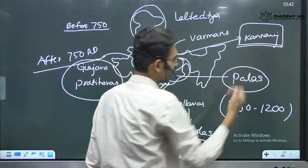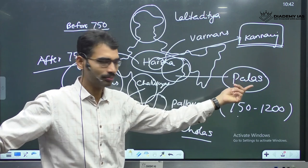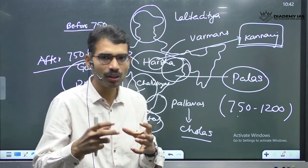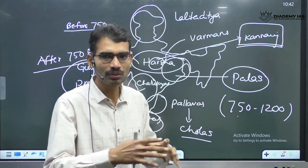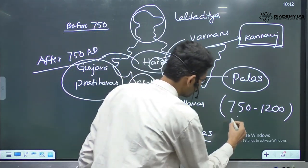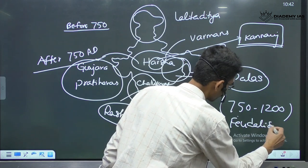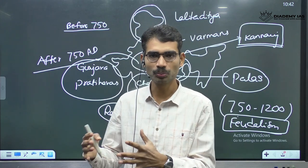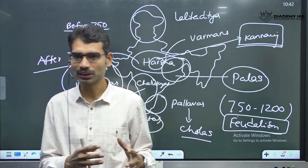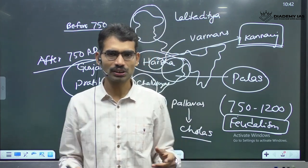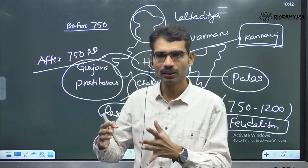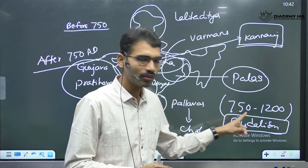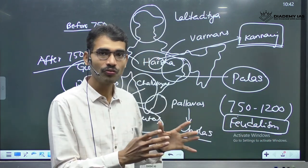There were so many other small kingdoms as well, not only Palas, Pratiharas, Rashtrakotas. These kingdoms we combinedly call the age of feudalism. Unlike Mauryans, unlike Guptas, there was no centralized administration around this time — decentralized administration, many kingdoms were ruling, and these people were almost independent in their own territories.